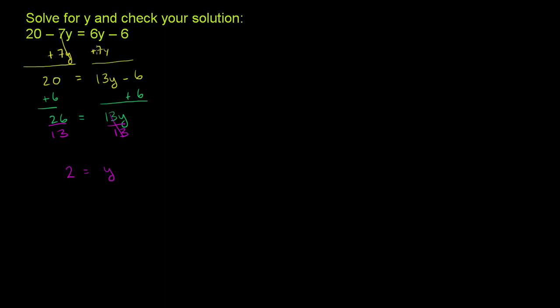Now I want to take a step back. Why did I say it would be a little bit easier to put the y's on the right-hand side of the equation? Well, because that way I got a positive coefficient in terms of y. I got 13y.